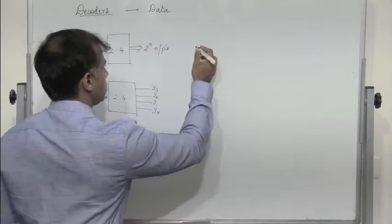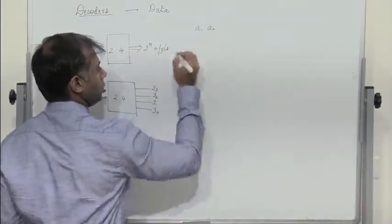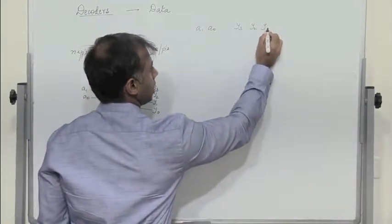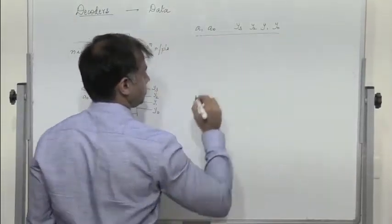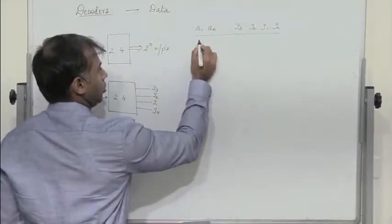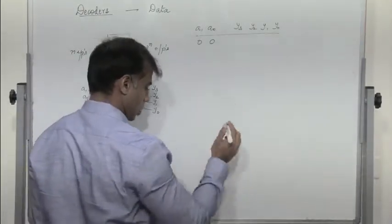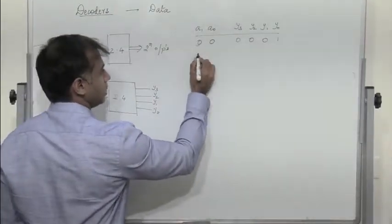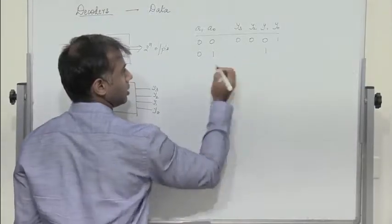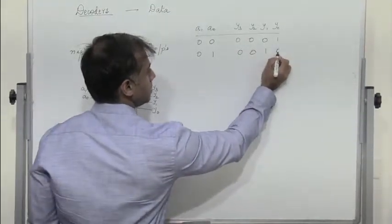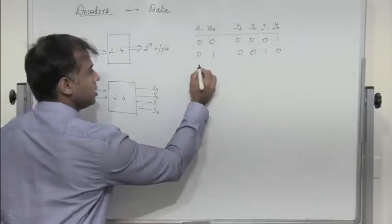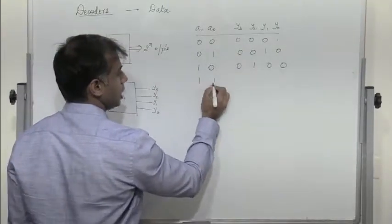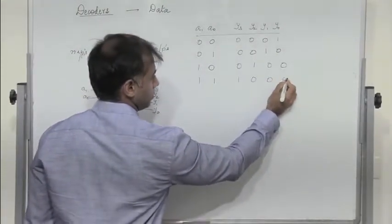Let's write a truth table with A1, A0, Y3, Y2, Y1, and Y0. When A1 and A0 are 0,0, Y0 is 1 with all other 3 being 0. When A0 is 1 and A1 is 0, Y1 is 1 with the others equal to 0. When we have the 1,0 combination, Y2 is 1, and when we have 1,1, Y3 is 1.